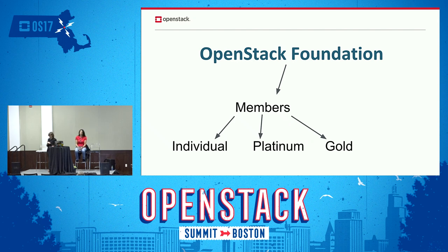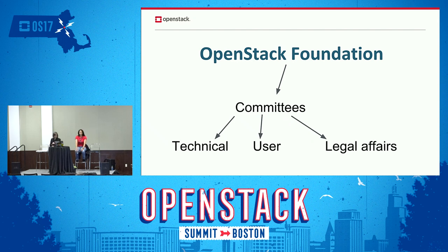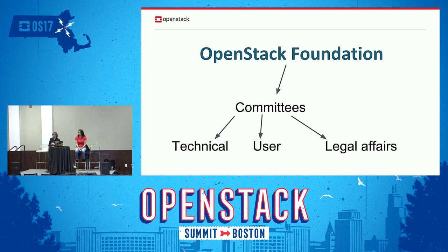We're going to come back to the individual members later. In terms of committees, we have the technical, user, and legal affairs committee. The technical committee oversees all OpenStack projects and helps decide on any decisions that need to be made, whether a new project needs to be incubated or whether there's an issue that needs to be resolved. The user committee looks at all feedback from users and deployment statistics. The legal affairs committee advises on all legal processes and intellectual property strategy.